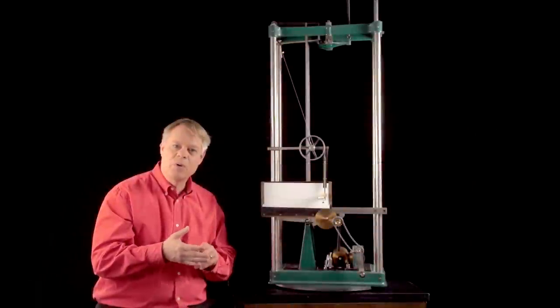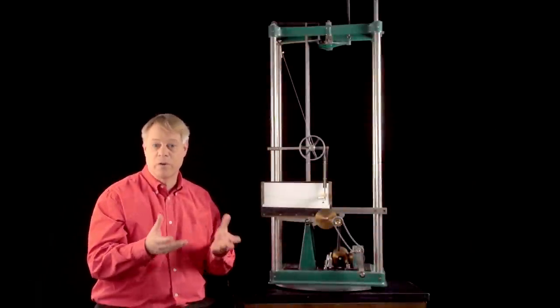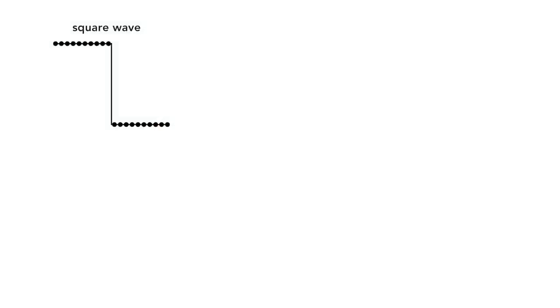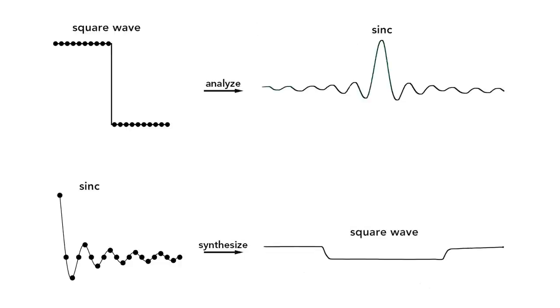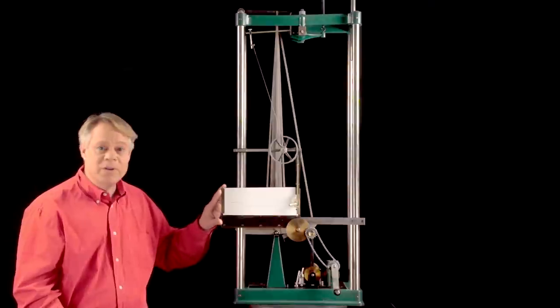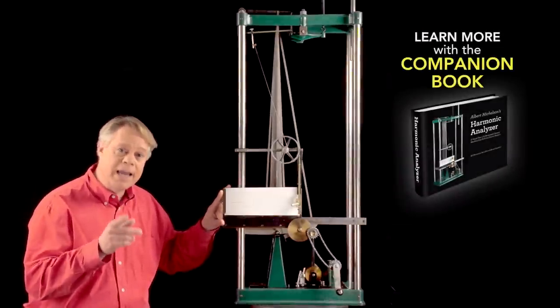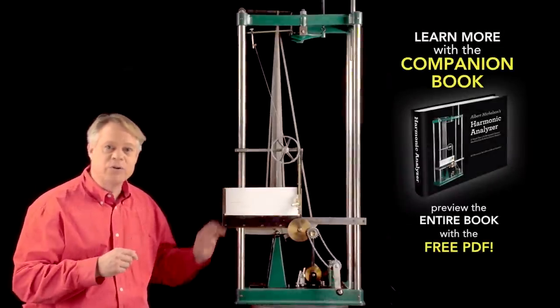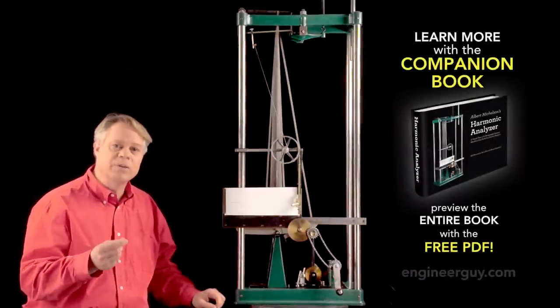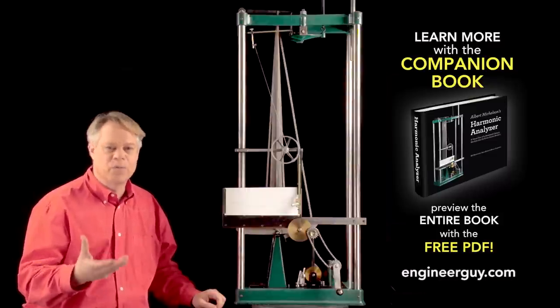What I've just shown with the machine is an essential feature of Fourier methods. I can take a function, perform harmonic analysis, extract the coefficients, and then synthesize that function to approximate the original. So now that we see that this machine can do harmonic synthesis and analysis, I'll show you in the next video some details about how to set up the analyzer to perform these calculations.